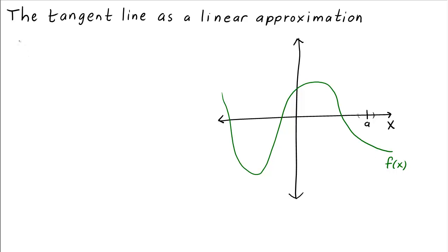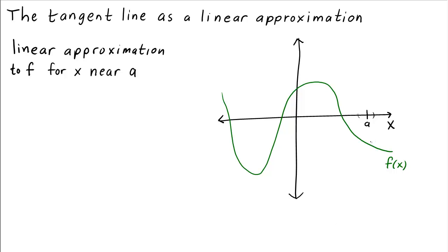One approximation is a linear approximation. Let's say we want to find a linear approximation to f for x near a. If f is a differentiable function, this means that around x equals a it looks like a linear function. If we zoom in and zoom in, eventually f will look linear.